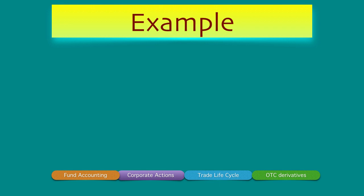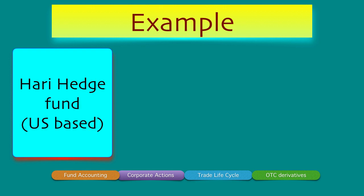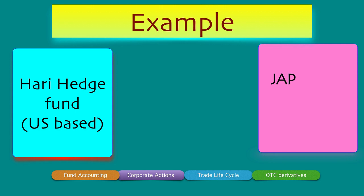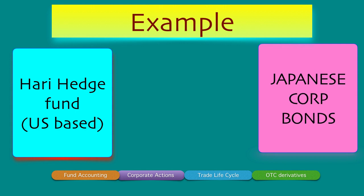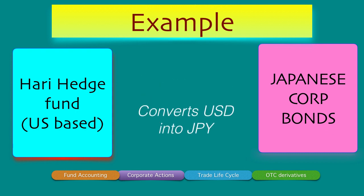Let's go straight into an example, because there's no better way to learn finance, markets, and structured products than with examples. Let's go back to our favorite hedge fund — Hari Hedge Fund. Hari Hedge Fund is a US-based fund that has invested in Japanese corporate bonds. It has collected dollars from accredited investors, and since Japanese corporate bonds are denominated in JPY, Hari Hedge Fund converts USD into JPY and makes the investment in JPY.